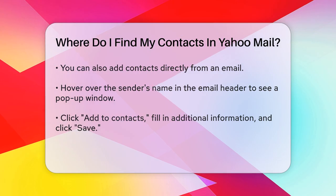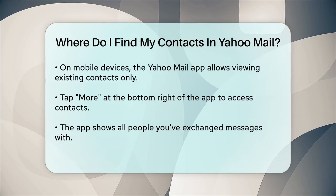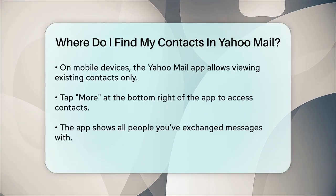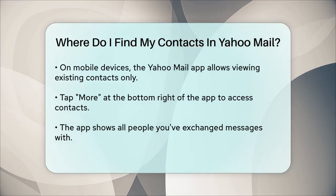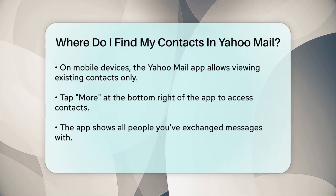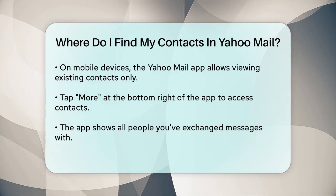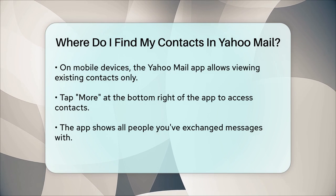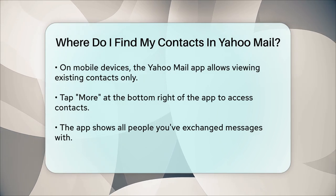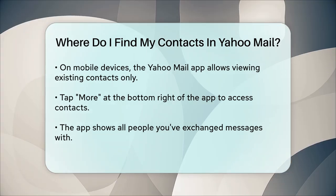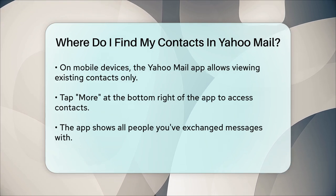On your mobile device, things are a bit different. The Yahoo Mail app doesn't allow you to add new contacts from scratch, but you can still view your existing contacts. Open the app, tap More at the bottom right of the screen, and then tap Contacts. Here, you'll see all the people you've exchanged messages with.